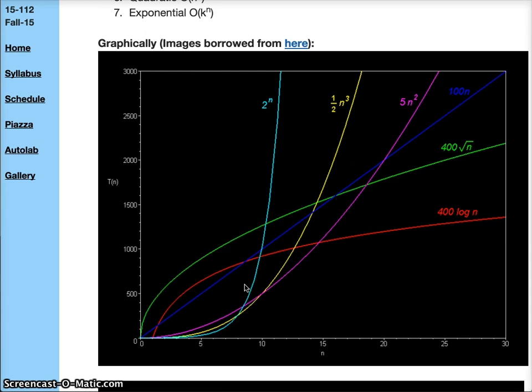Because in the asymptotic behavior when the input size increases, we can see that 2 to the N is much, much worse. That's exactly what we care about.